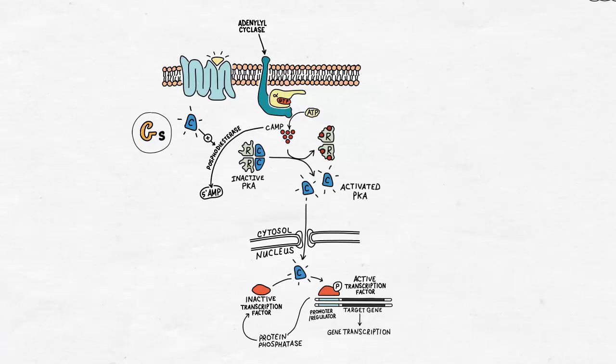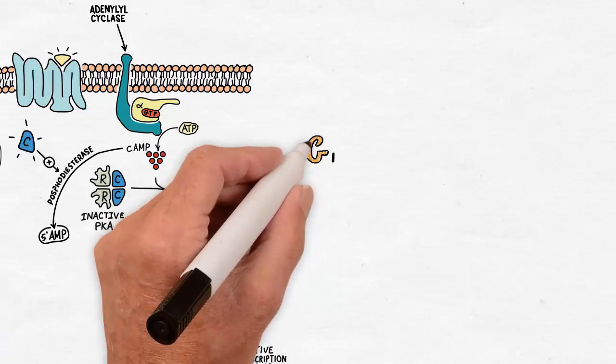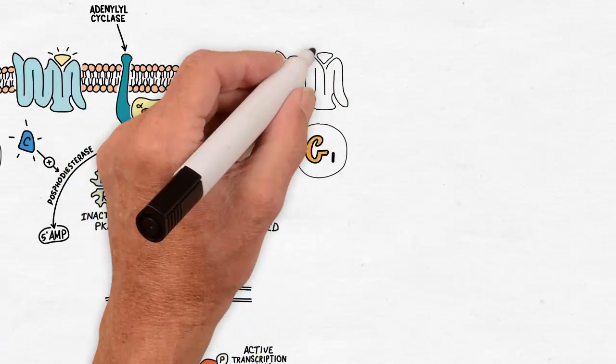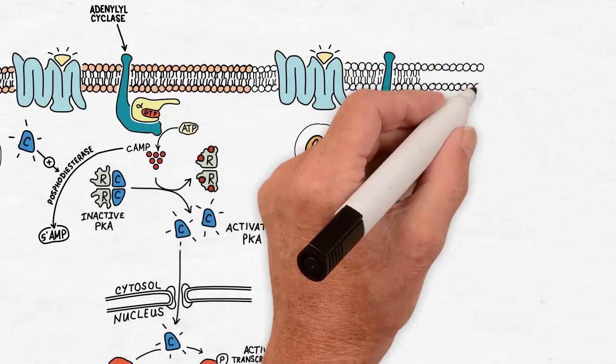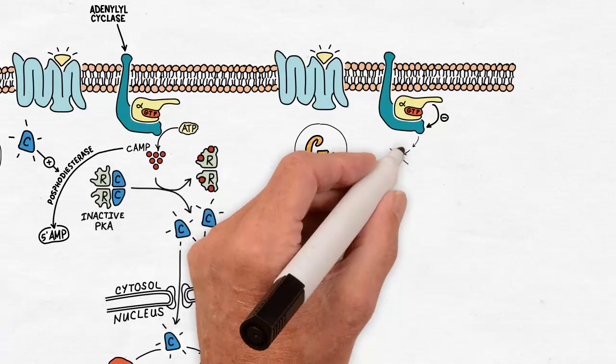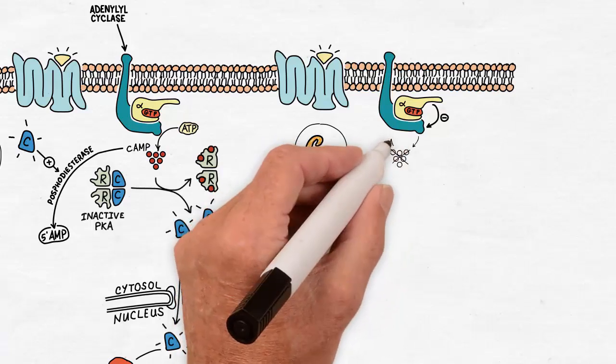Well, if the activated alpha subunit is of the I type, which means GI protein, it inhibits adenylyl cyclase enzyme, decreasing cyclic AMP. In response, PKA will not be activated, which is an opposite action to the GS protein.